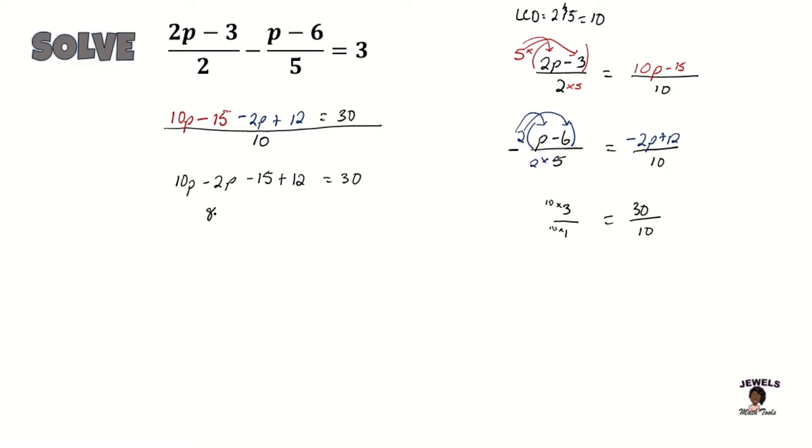So we have 10p minus 2p would equal 8p. And when negative 15 is added to 12, we are going to have negative 3 equals 30. Okay, so now let's collect our like terms and we have negative 3 and 30 which are both constants. So since our 3 is being subtracted on the left hand side, we will be adding 3 to 30 on the right hand side. So my 8p is equal to 33. And now we are going to apply our one step rule to get our p by itself, which means that we are dividing both sides of our equation by 8. So 8 divided by 8 will leave us with p, and this is p is equal to 33 eighths.